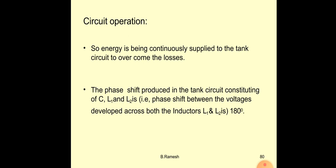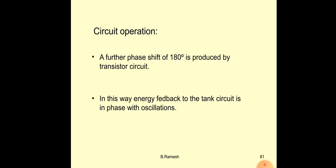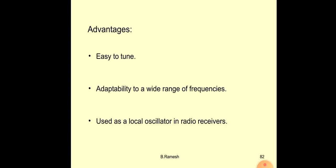Energy is continuously supplied to the tank circuit to overcome losses, because the tank circuit produces a damped signal. To get an undamped signal, we must use an amplifier. The phase shift produced in the tank circuit — consisting of C, L1, and L2 — is 180 degrees between the voltages developed across both inductors. A further 180-degree phase shift is produced by the transistor circuit, so energy fed back to the tank circuit is in phase with the oscillations.